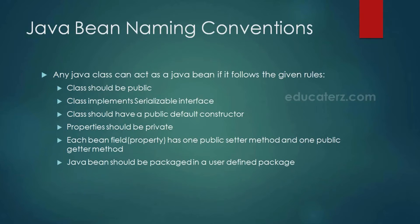To write a Java Bean we need to follow some naming conventions. The class should be public and it should implement the Serializable interface of the java.io package and should have a public default constructor. The properties declared inside the class should be private, and each property should have one public setter method and one public getter method. It should also be packaged in a user-defined package.